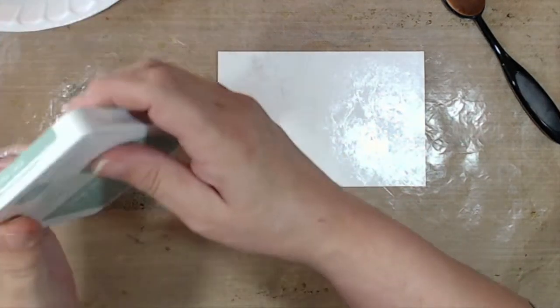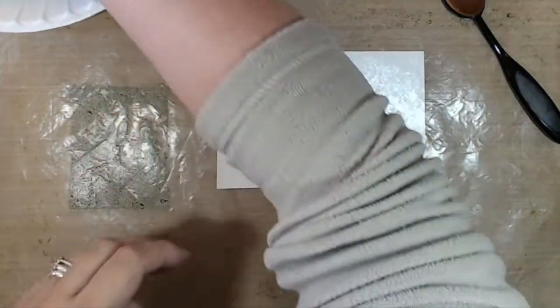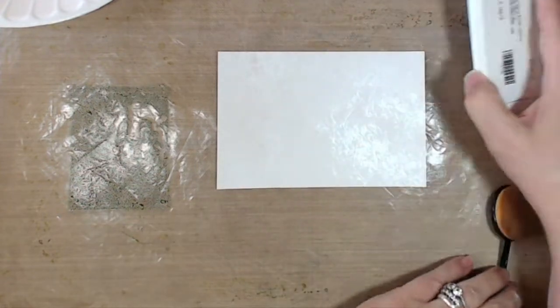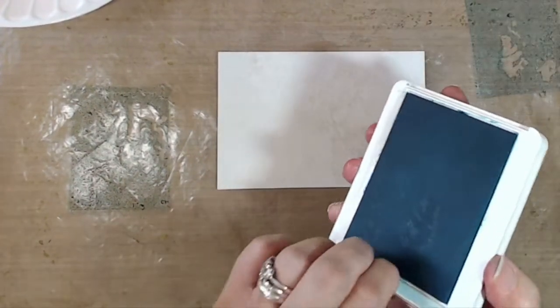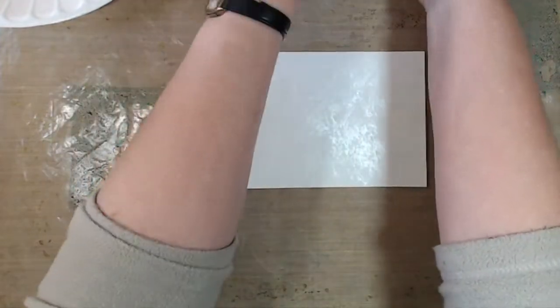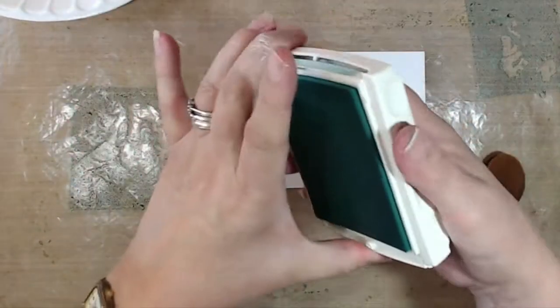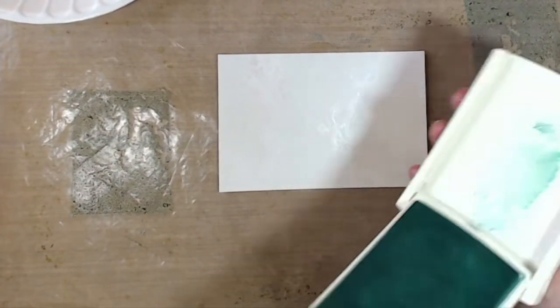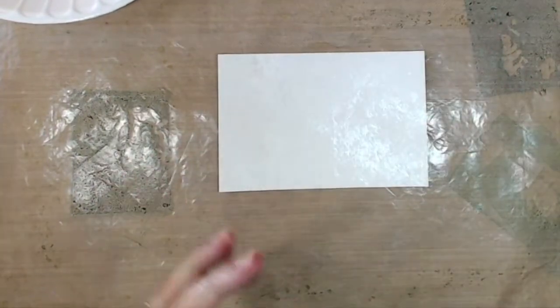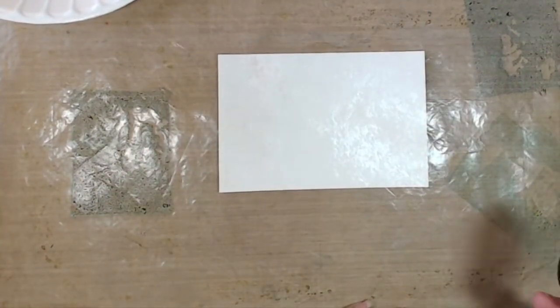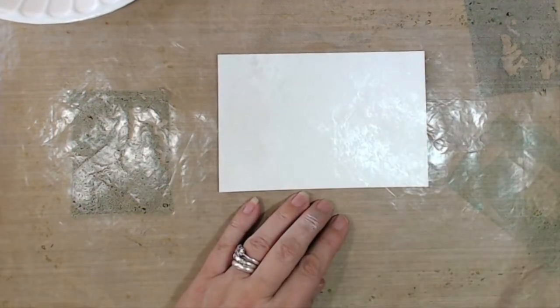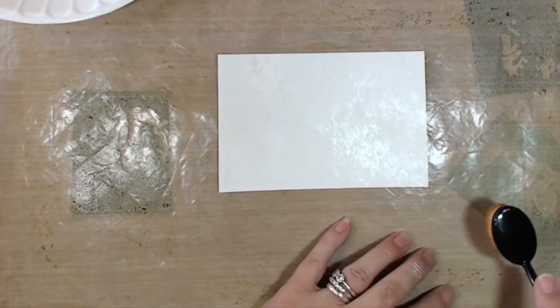So I've got mint macaron, a dab of that, and I'll have a dab of balmy blue as well, and a little bit of pool party. The reason why I'm pressing these down onto my craft mat is so that if I get carried away, which I'm wont to do, I won't dip my brush into the wrong ink pad and contaminate my colors.